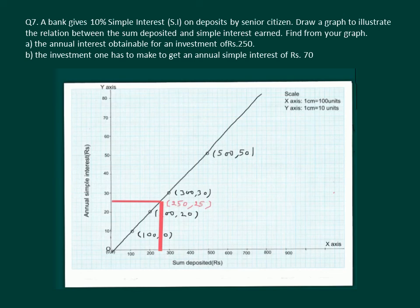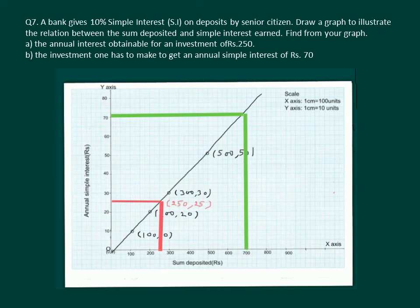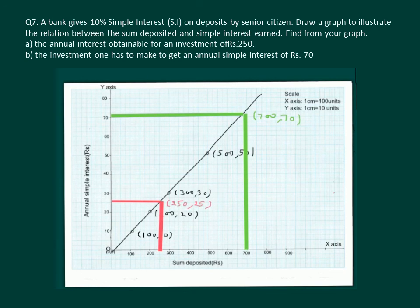Next, we find the investment required to get an annual simple interest of Rs 70. We locate 70 on the y-axis, draw a perpendicular to the graph line, and from that point draw a perpendicular to the x-axis. We find that the coordinates of the point are (700, 70), meaning to earn interest of Rs 70 one has to deposit Rs 700. Hence we have learned how we can calculate other values from the graph.